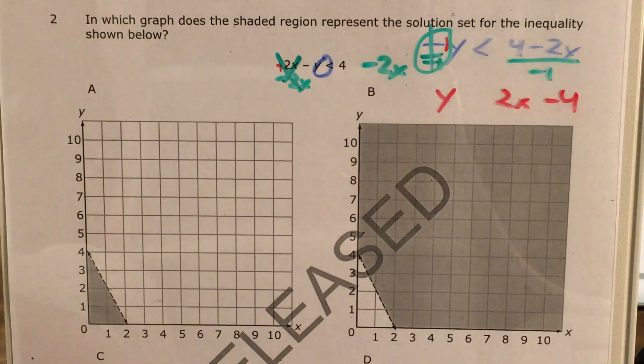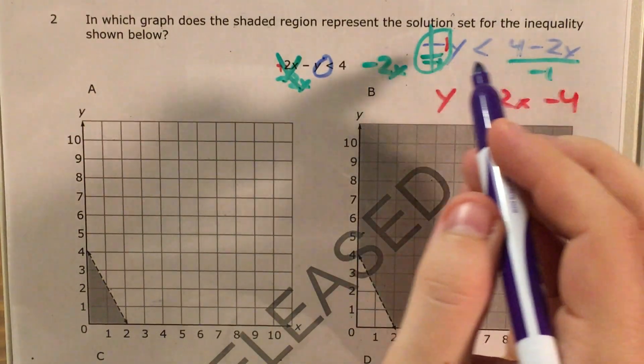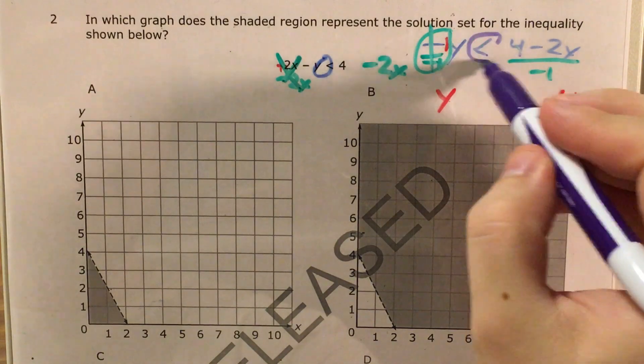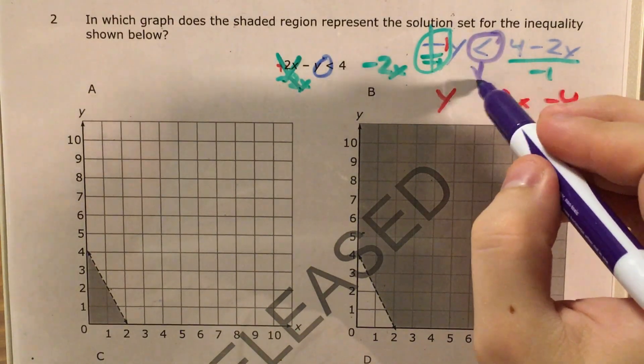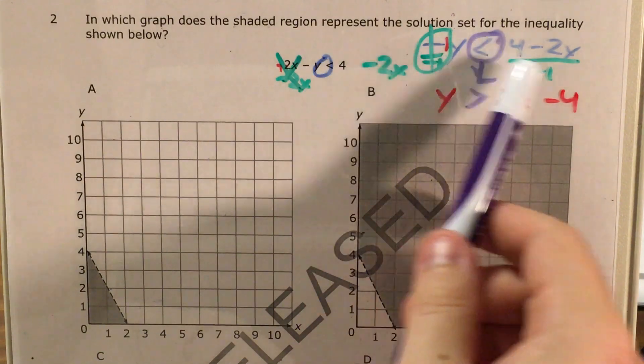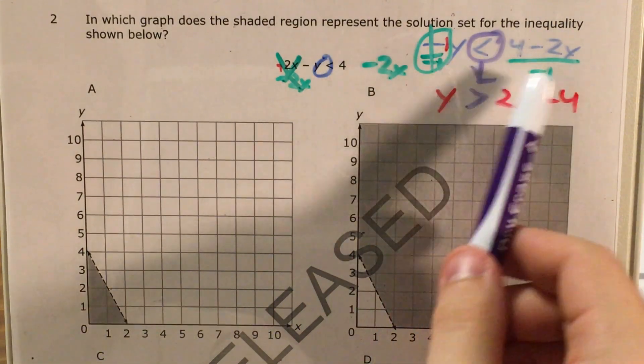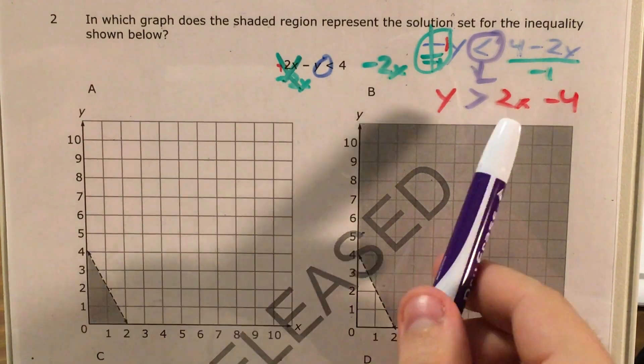But now this sign in the middle is not going to be quite what I'm expecting. And I have to remember that if I divide by a negative number or I multiply by a negative number, then I have to take this sign and change its direction. So if negative y is less than all of this, positive y is greater than the negative of all of this.